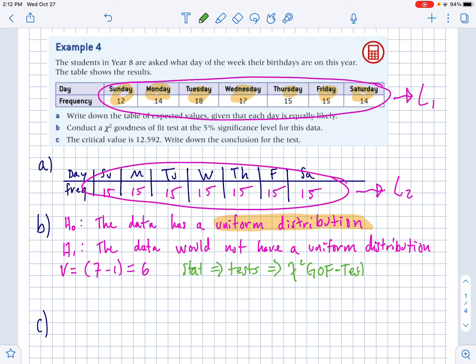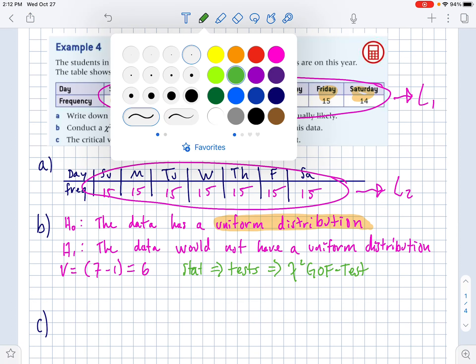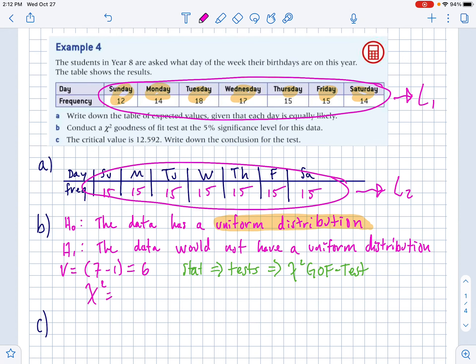Then make sure the observed and the expected that L1 and L2 are in there, and then you can change your degrees of freedom to 6, and then hit calculate, and then boom, you should get 0.953 for the p-value and 1.6 for the chi-squared. So that was us running a chi-squared goodness of fit test to be able to find a chi-squared and a p-value, which you guys are familiar with from last lesson.